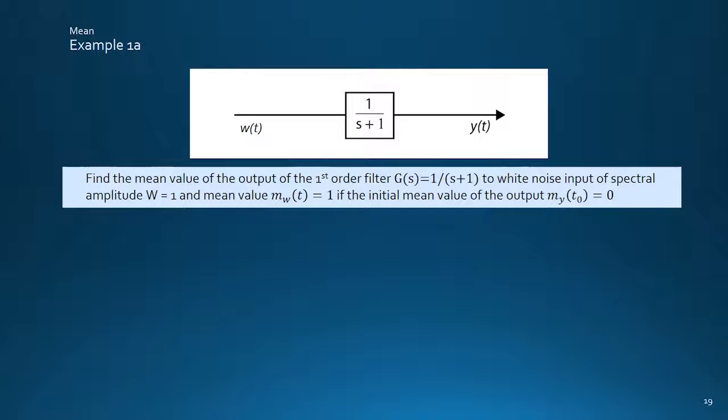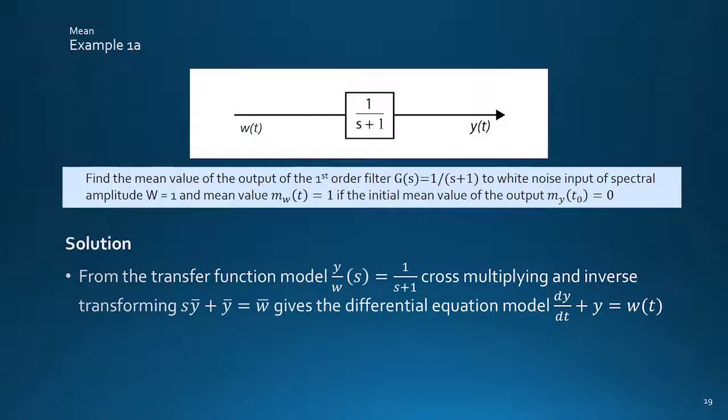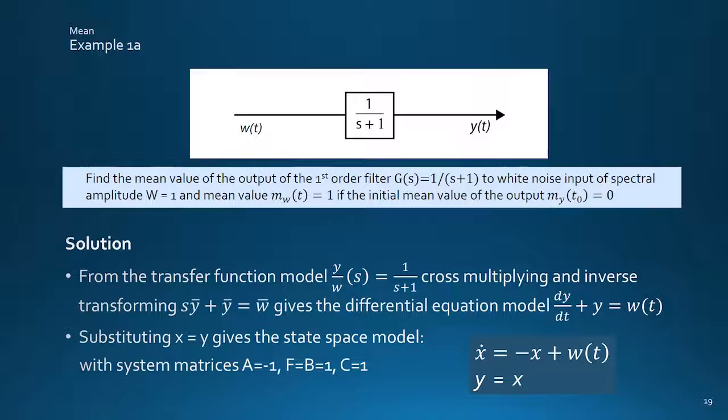But in the example used in the first half of the clip, of a simple first order low pass filter, it is easy to find the STM. The task is to find the changing mean value of the initially zero output, in response to an input noise signal with a DC offset of 1 volt. Firstly, the transfer function must be recast as the state space model, here by cross-multiplying to get the differential equation form, and then substituting phase variable X for Y in the system equation, and taking the 1 volt offset as a separate deterministic input, showing the same input vector.